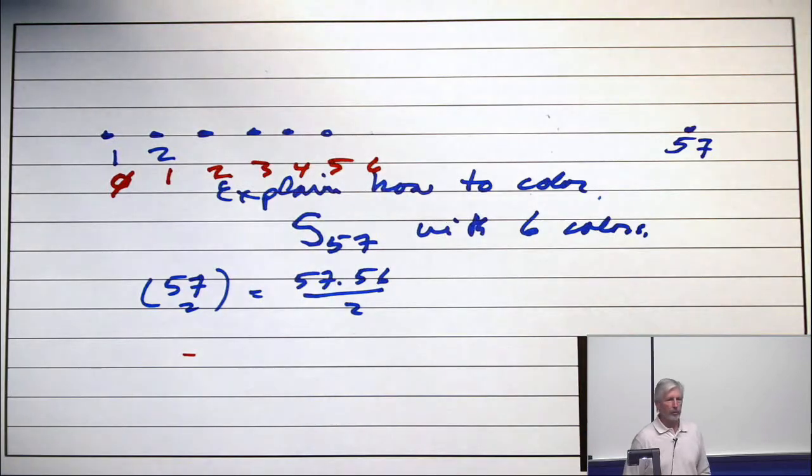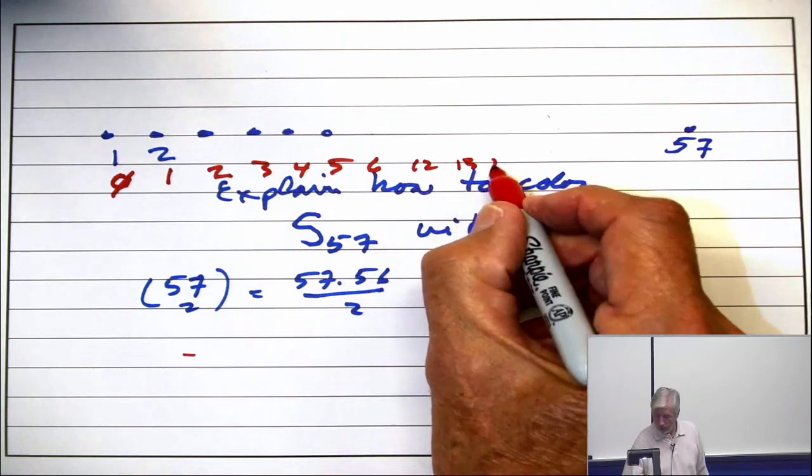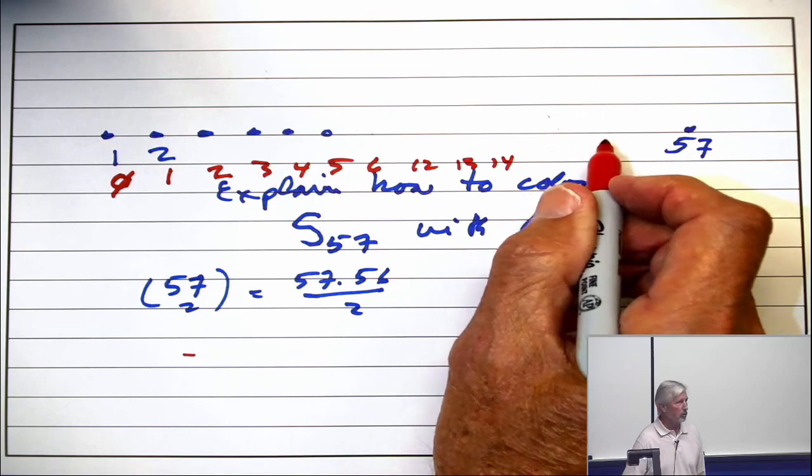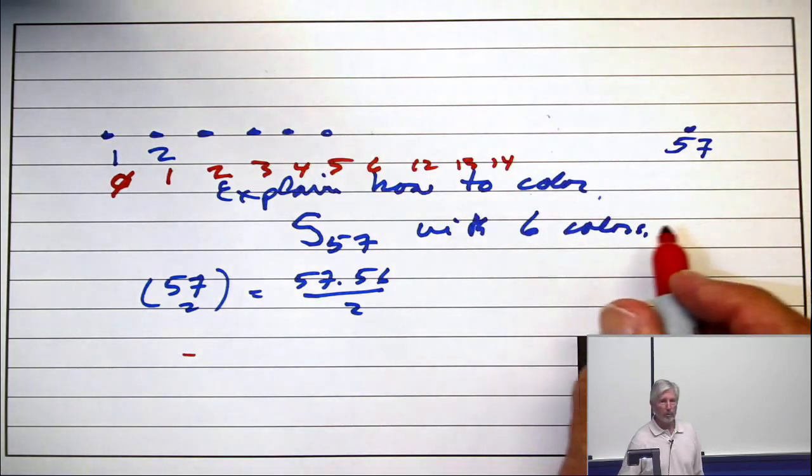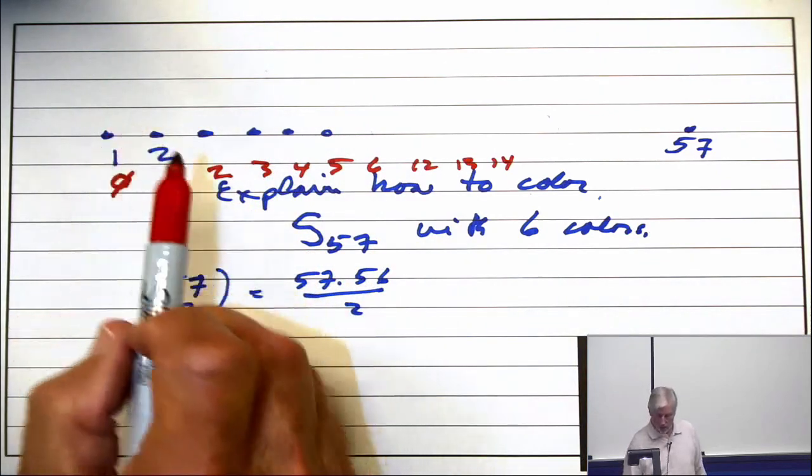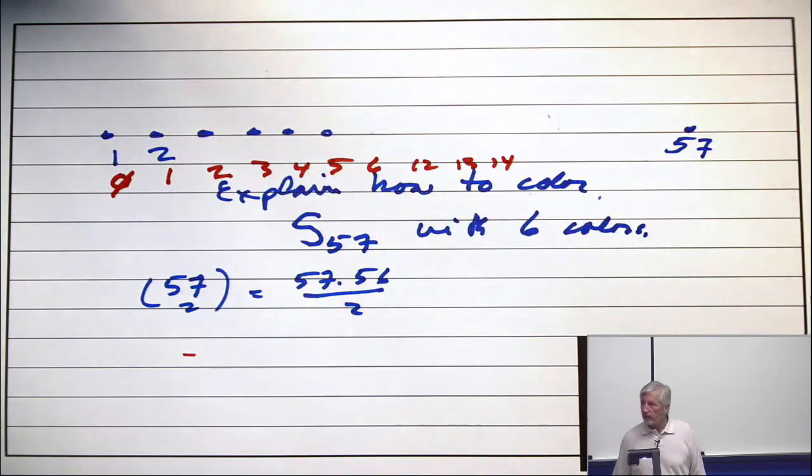Now write the doubletons. I don't care what order you write them in. 1, 2, 1, 3, 1, 4, 1, 6, 2, 3, 2, 4, 2, 6. Okay, then write the triples. Then write the fours. Write one set under each number. I got enough sets, don't I?